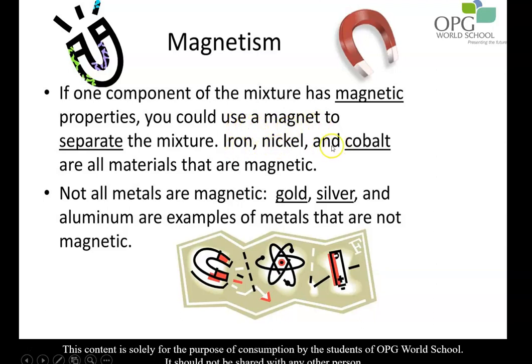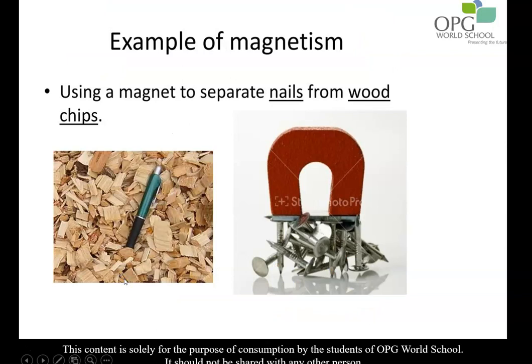Iron, nickel, and cobalt are the three metals that are attracted to a magnet, but not all metals are magnetic. For example, gold, silver, and aluminum are non-magnetic metals. So we can separate a mixture of wood chips and nails from each other using magnetism. A bar magnet can separate out the nails because nails are made of iron, but wood chips are non-magnetic.